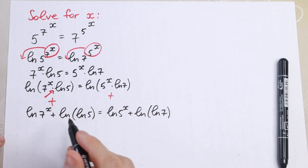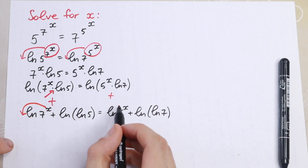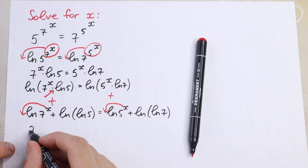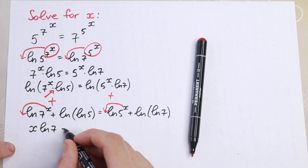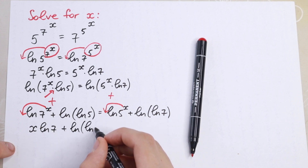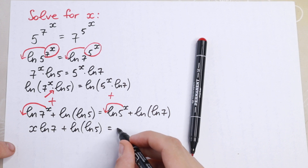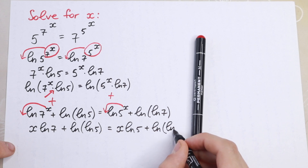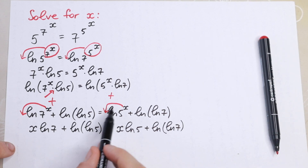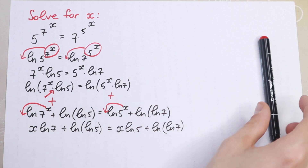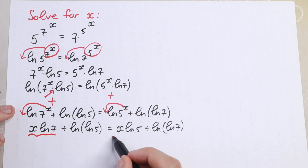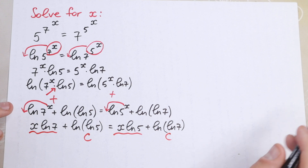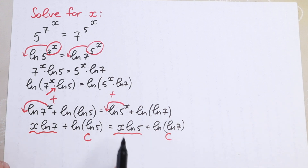On the right we have the same case: natural log of 5 to the power x plus natural log of natural log 7. Now x can be brought to the front. We will have x times natural log 7 plus natural log of natural log 5, equal to x times natural log 5 plus natural log of ln 7.